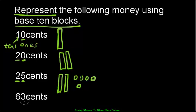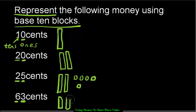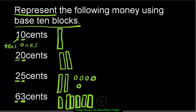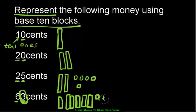How about 63 cents? The same idea applies — you still have six tens and three ones. So you're going to draw six tens — I'm going to have to squish them. One, two, three, four, five, six of them. And then how many ones do we need? We need three of them — one, two, three.